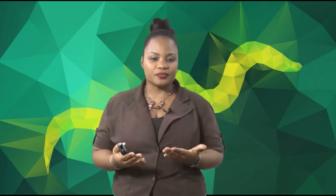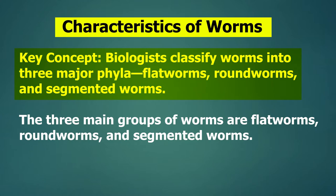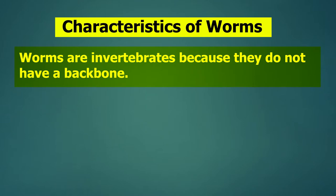Characteristics — what are the characteristics, or the similarities of worms? What do they have in common? Biologists classify worms into three major phyla: flatworm, roundworm, and segmented worms. Worms are invertebrates because they do not have backbones.